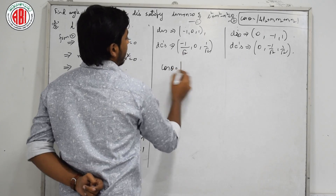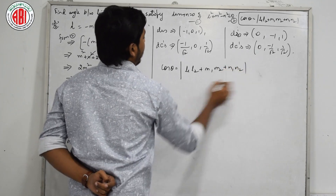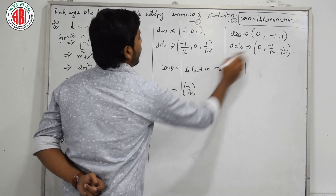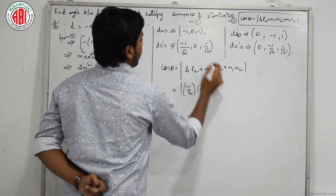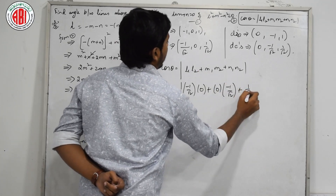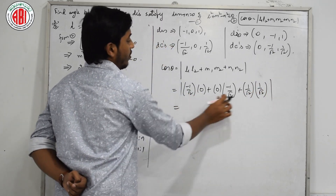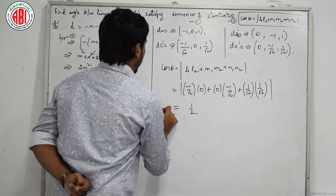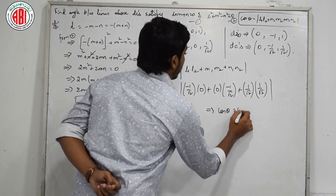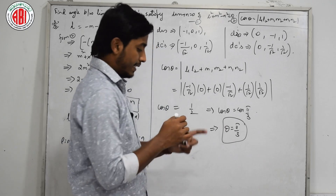These are L1, M1, N1 and L2, M2, N2. The value of cos theta equals L1L2 plus M1M2 plus N1N2. Substituting: (minus 1/root 2)(0) plus (0)(minus 1/root 2) plus (1/root 2)(1/root 2). The first two terms are 0, and the last term gives 1 by 2. Since cos pi by 3 equals 1/2, therefore the angle between the lines is 60 degrees.